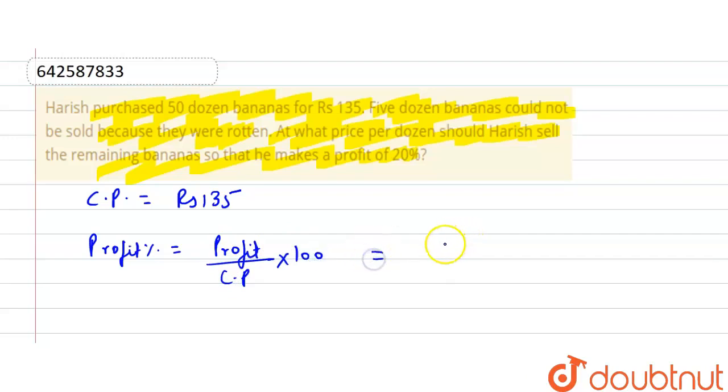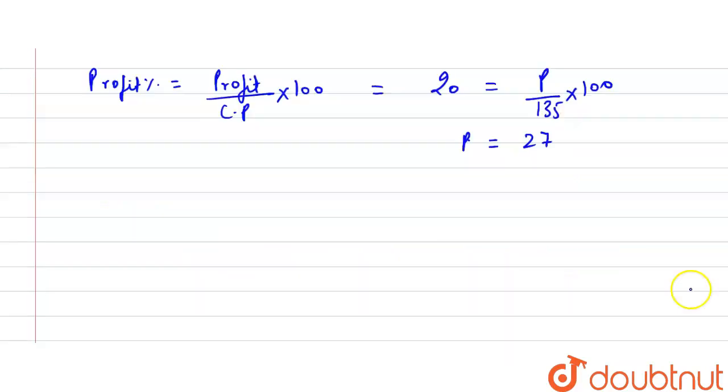From here we find the profit. 20 equals profit over 135 multiply 100. From this we find P is 27, so profit is 27.